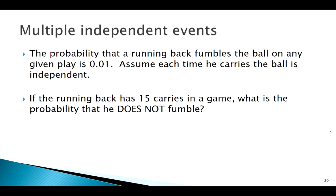We're going to combine some rules here. What are some keywords we see? 'Does not fumble.' Do we see an 'and' or an 'or'? Not really, but this question is about a sequence of events. When we have a sequence of events, it's almost like there's an implied 'and' there. We want to know he's going to get it 15 times - what's the probability he does not fumble?